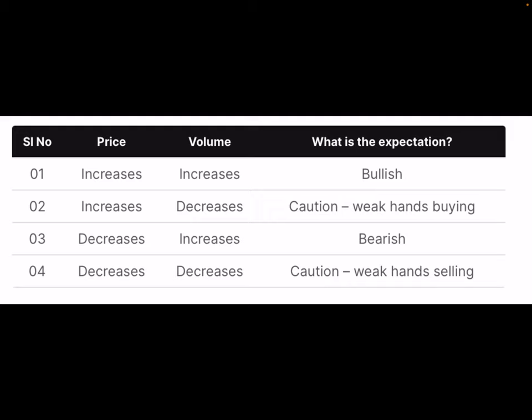This is exactly what the first row of the volume trend table indicates — expectation turns bullish when both price and volume increase. Now what do you think when the price increases but the volume decreases, as indicated in the second row? Why is the price increasing? Because market participants are buying. But are there any institutional buyers? Not likely. How would you know? Because if they were buying, the volume would have increased and not decreased.